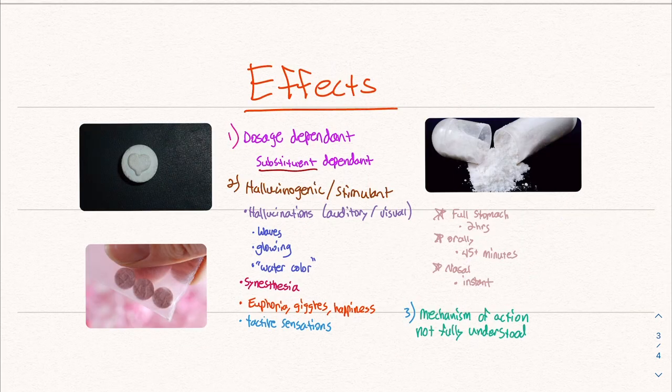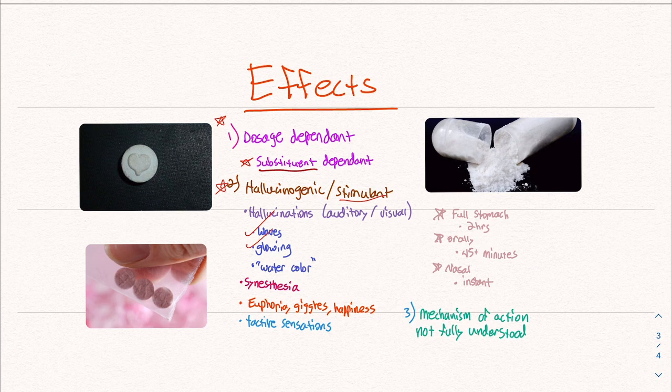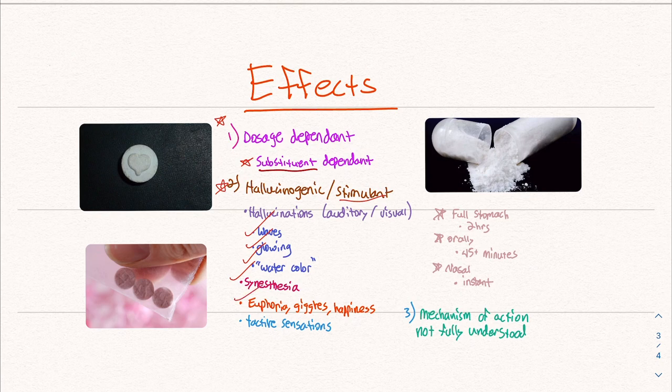And I mentioned this can be taken orally or snorted. The effects of 2C-B, just like any drug, are dosage dependent and substituent dependent. When I say substituent, I mean those puzzle pieces. The issue with 2C-B, especially any recreational drug, is that you do not know how much you're getting. If it's made by some random person, you're not going to get these specific calculations. So again, that's another risk you're taking. It is a hallucinogen and it's a stimulant, very similar to MDMA. These hallucinations can include waves, things being wavy, things glowing, a watercolor-like effect, synesthesia, which is when you hear color or see sound, euphoria, giggles, happiness, tactile sensations, again, similar to MDMA.